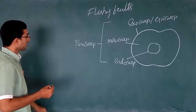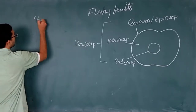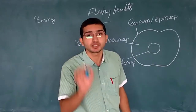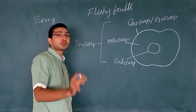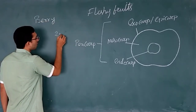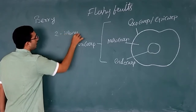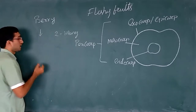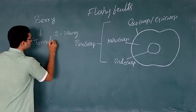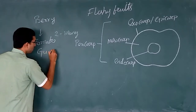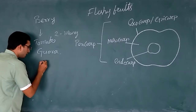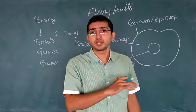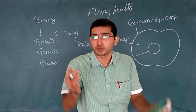The first type is the berry. A berry is composed of multicarpellary, syncarpous ovaries — it has two or many carpels. Examples of berries include tomato, guava, and grapes.